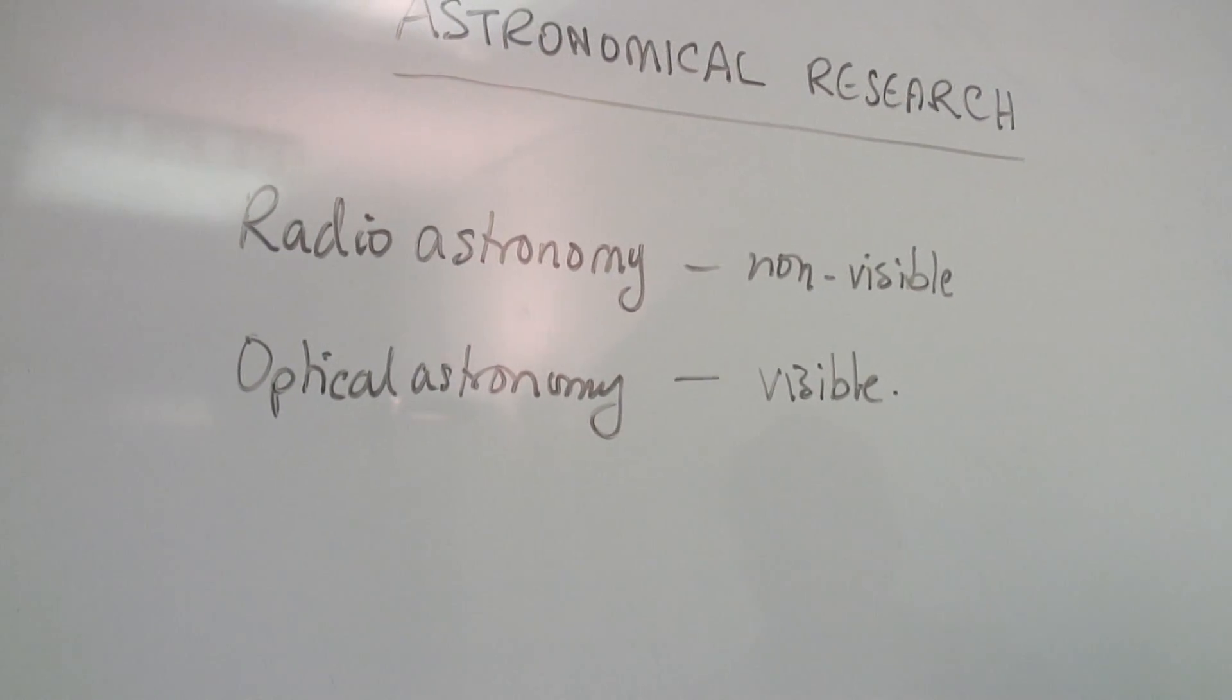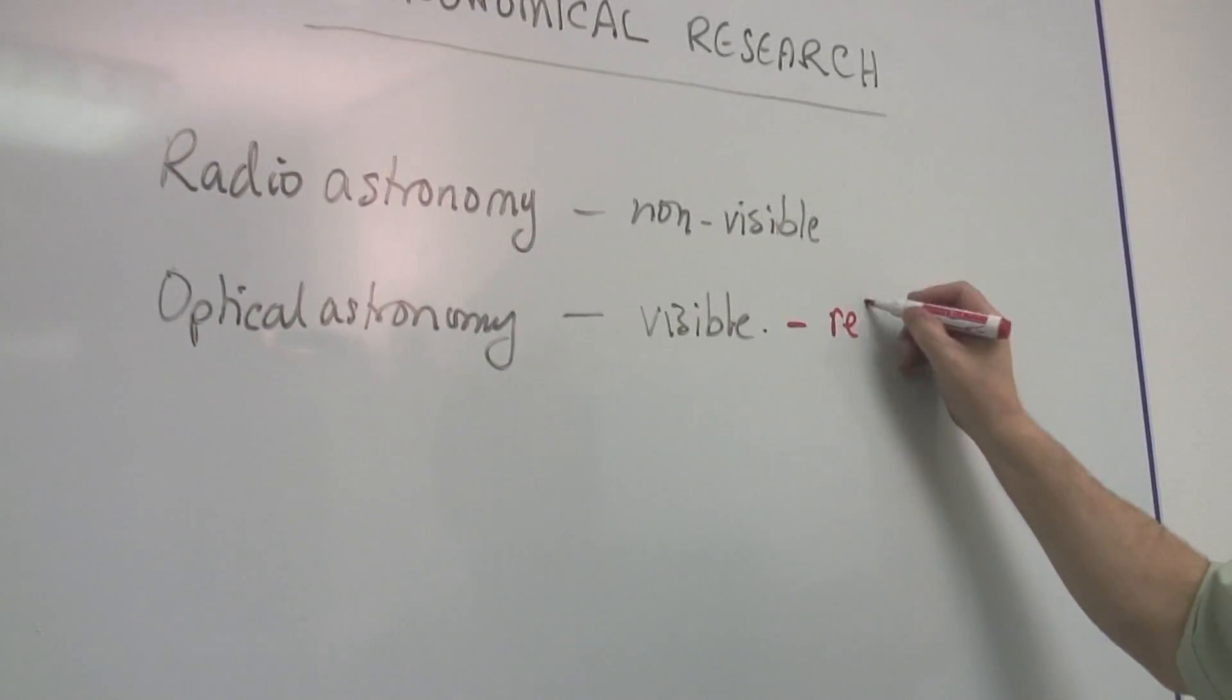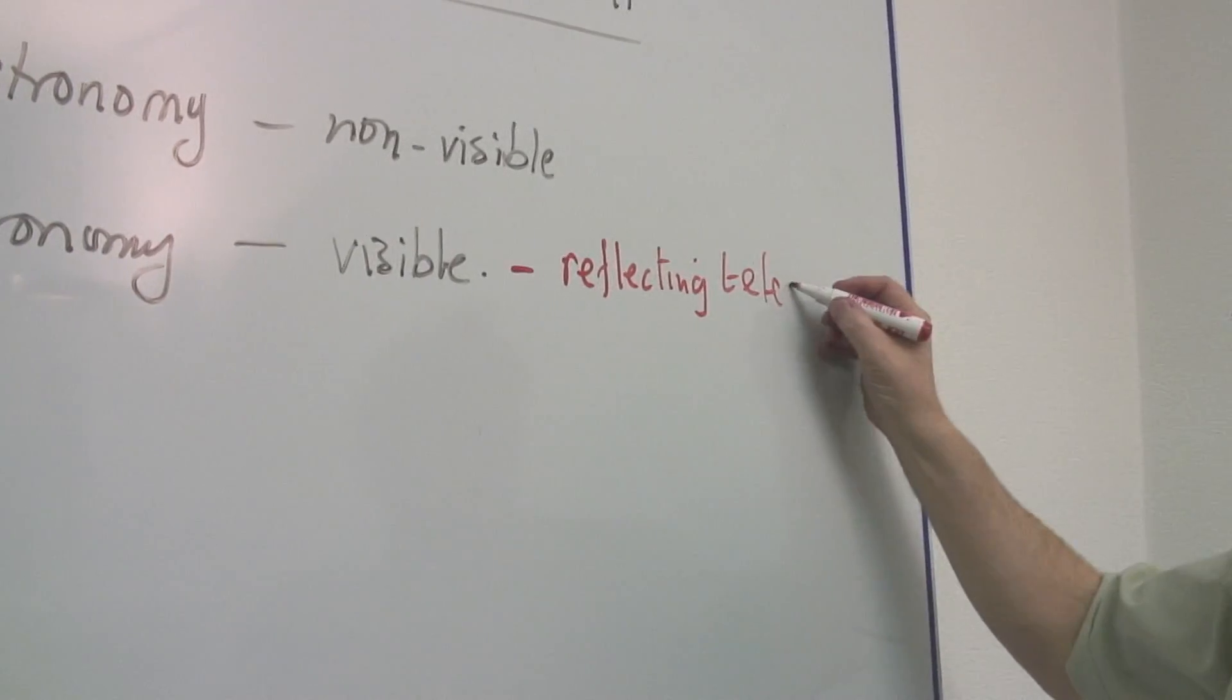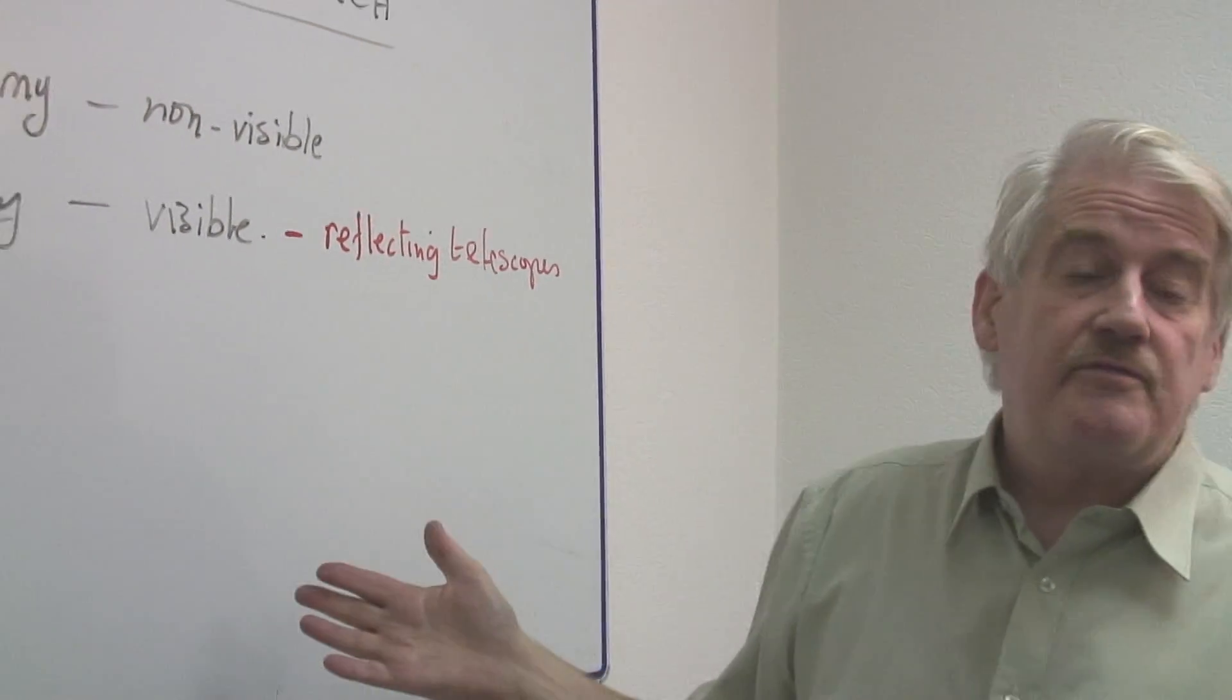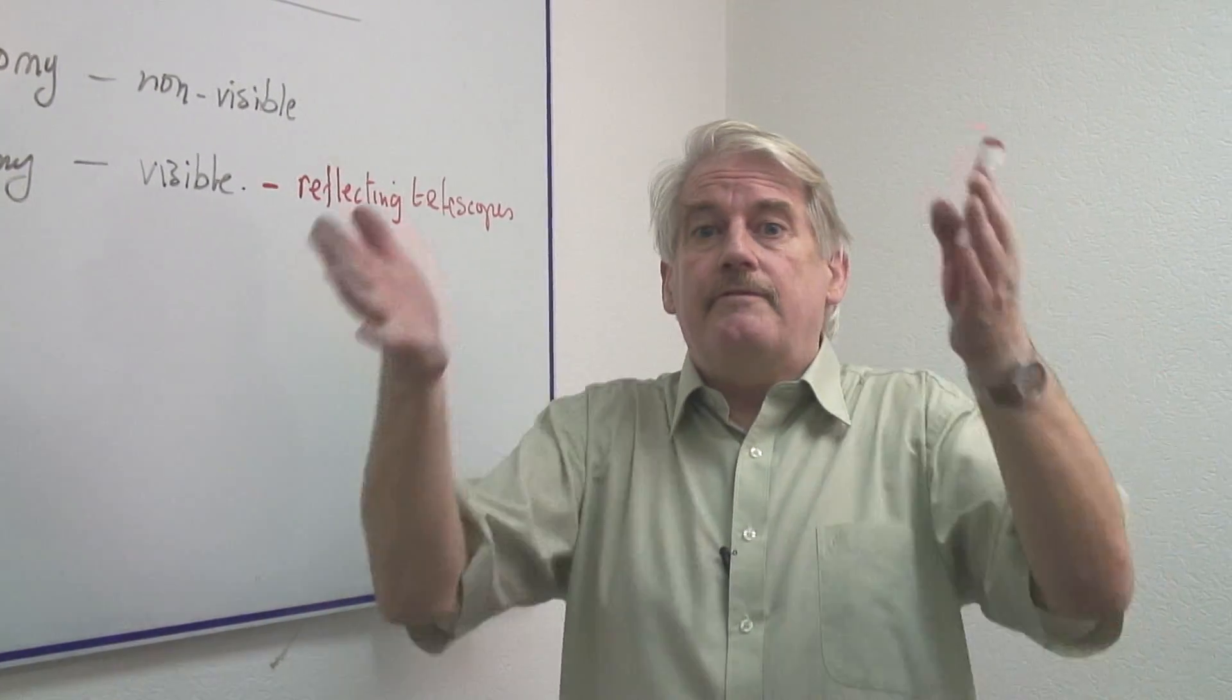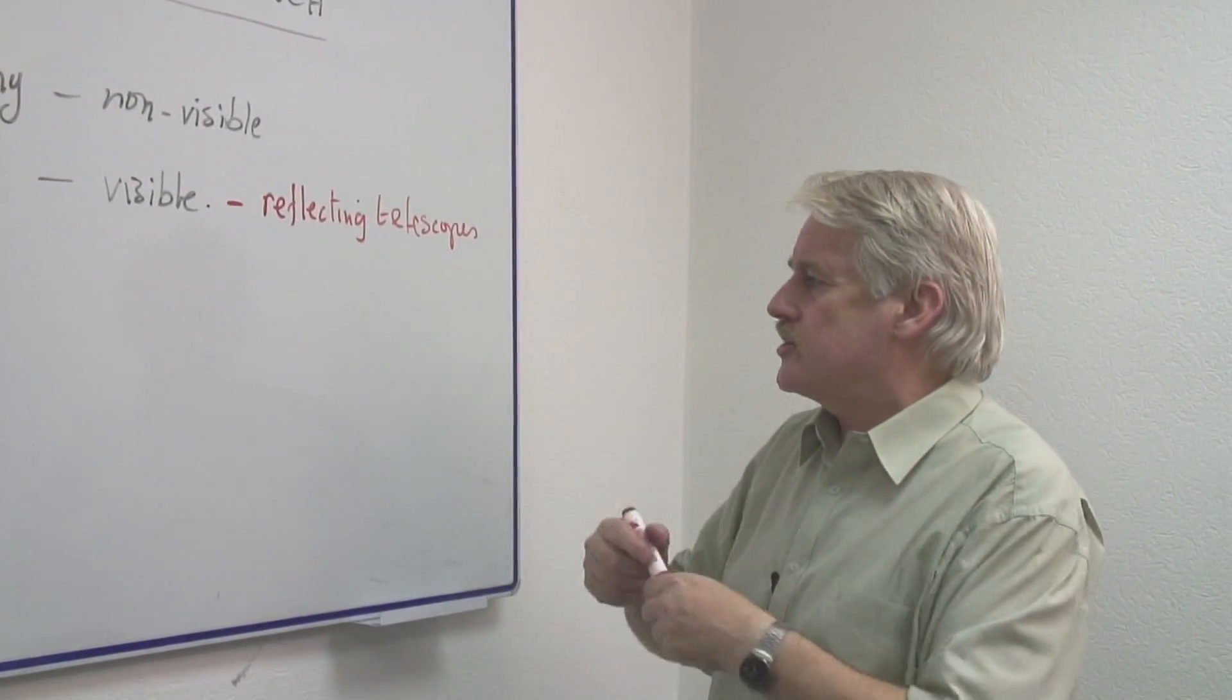Visible astronomy using visible light will use conventional reflecting telescopes and these are based on a large mirror, and the large mirror may be as big as five or six meters in diameter. The idea is to collect as much light as possible and focus it into a viewing lens. So this is a reflecting telescope.